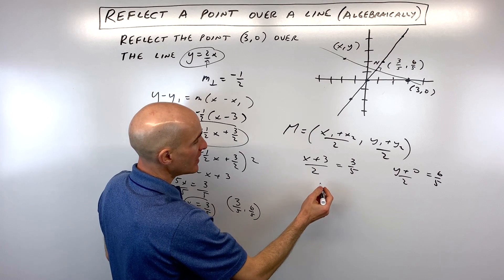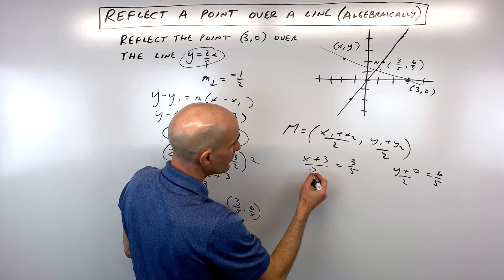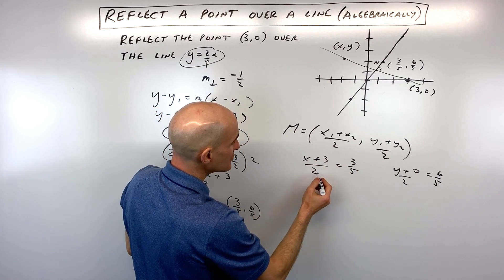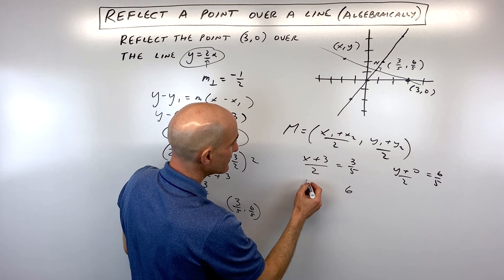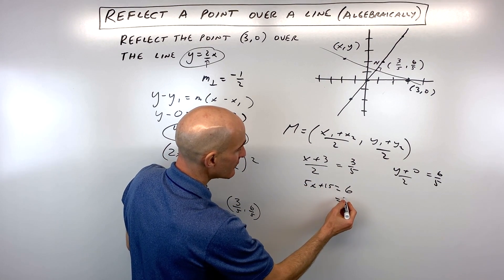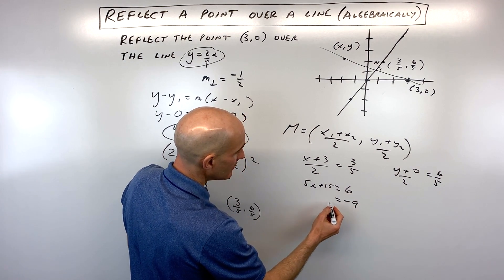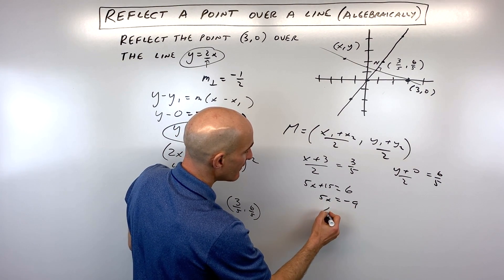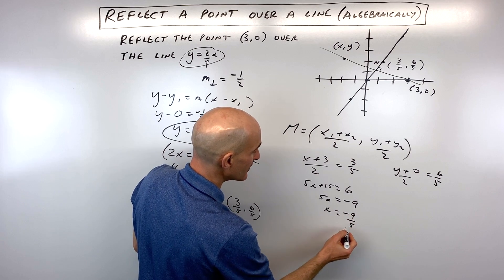Now if we solve these two equations, we can do some cross multiplying here. 2 times 3 is 6, and 5 times x plus 3 is 5x plus 15. Subtract 15, that's going to give us negative 9. And then if we divide both sides by 5, we get x equals negative 9 fifths.